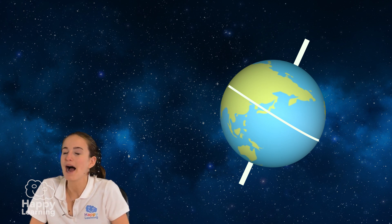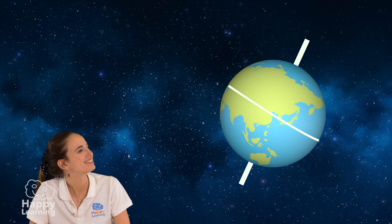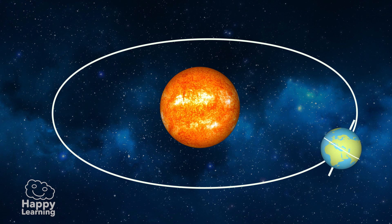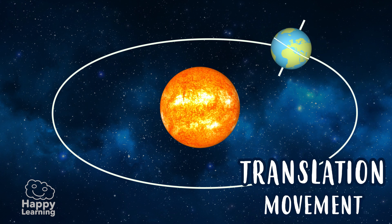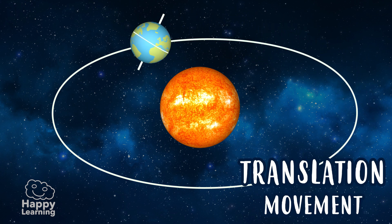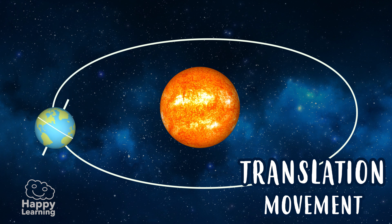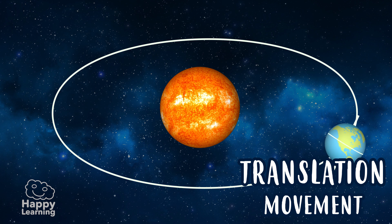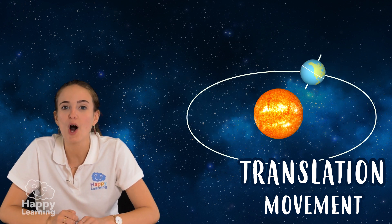Now let's see how our planet moves around the Sun. It is what we call a translation movement. As you can see, the Sun heats the Earth but not equally around the whole world.